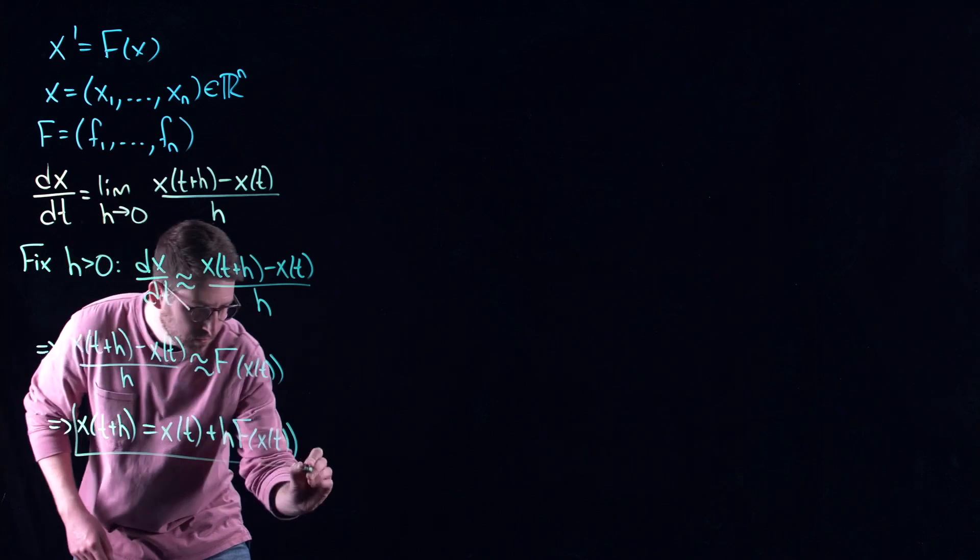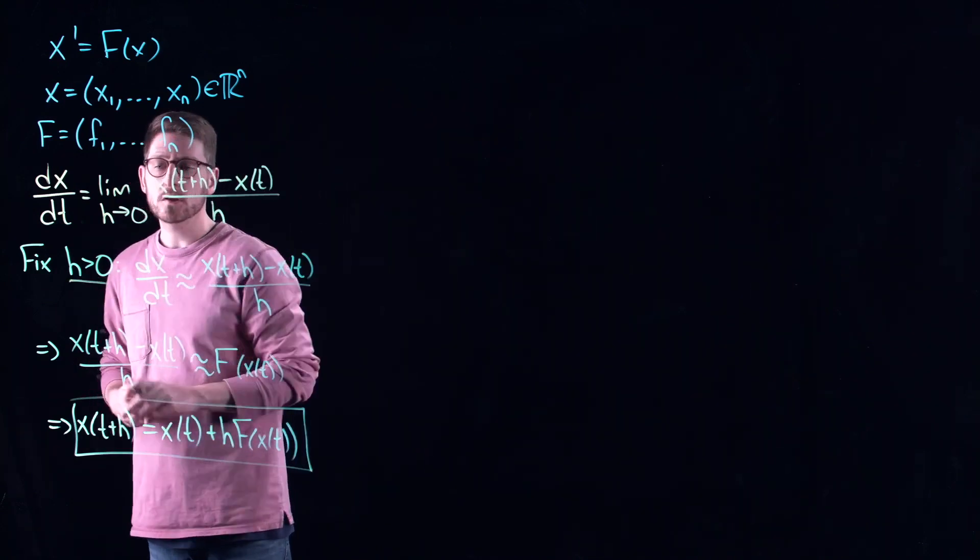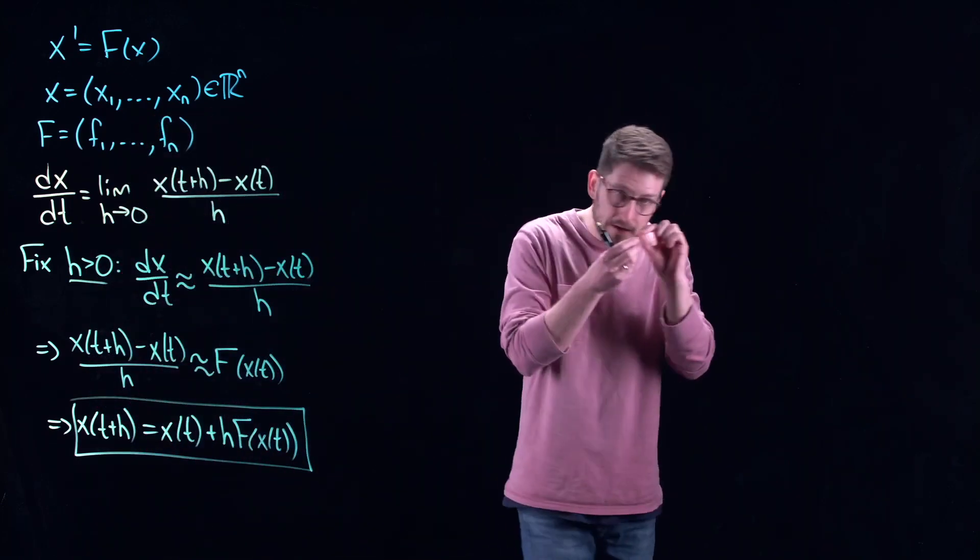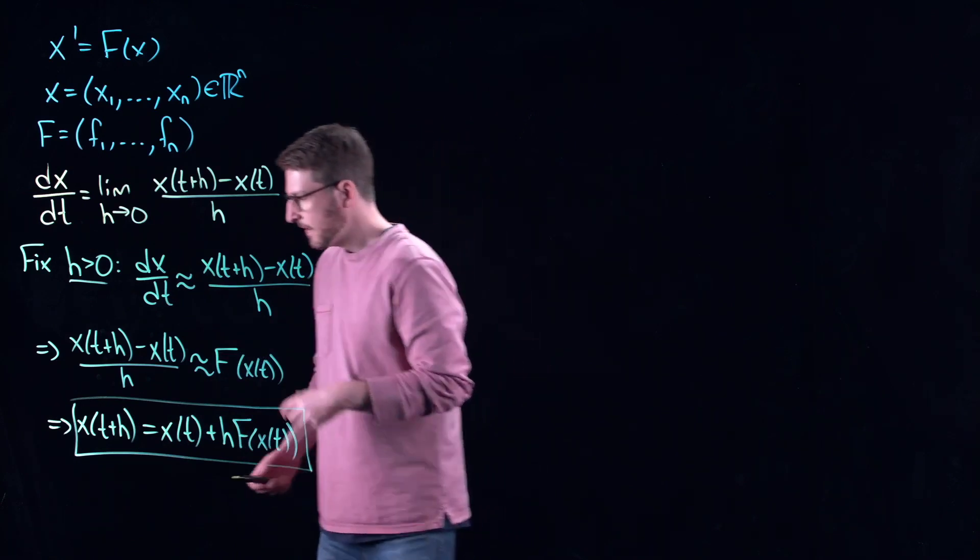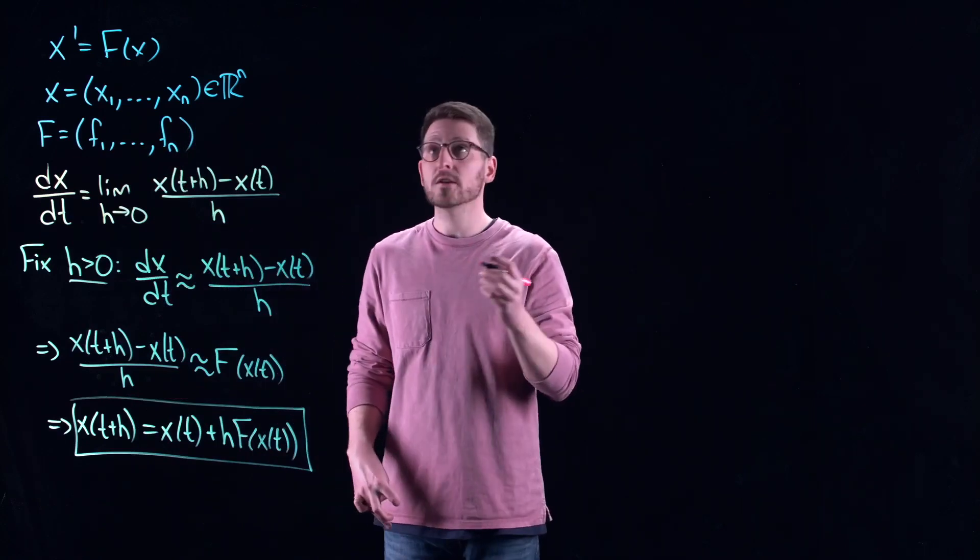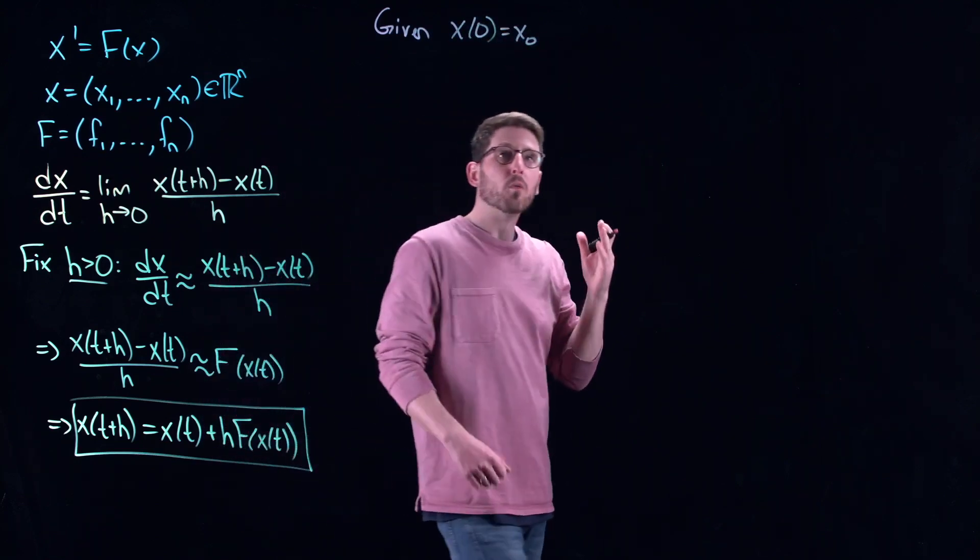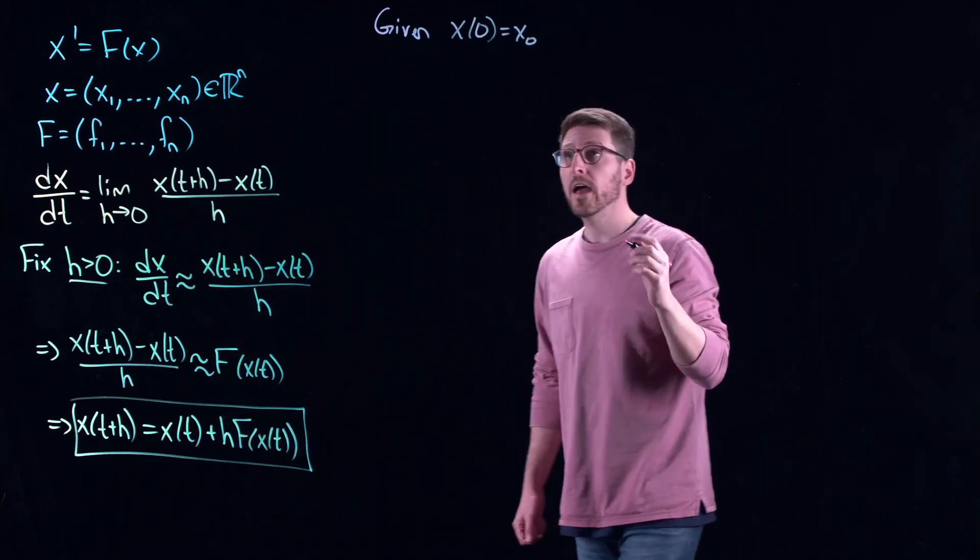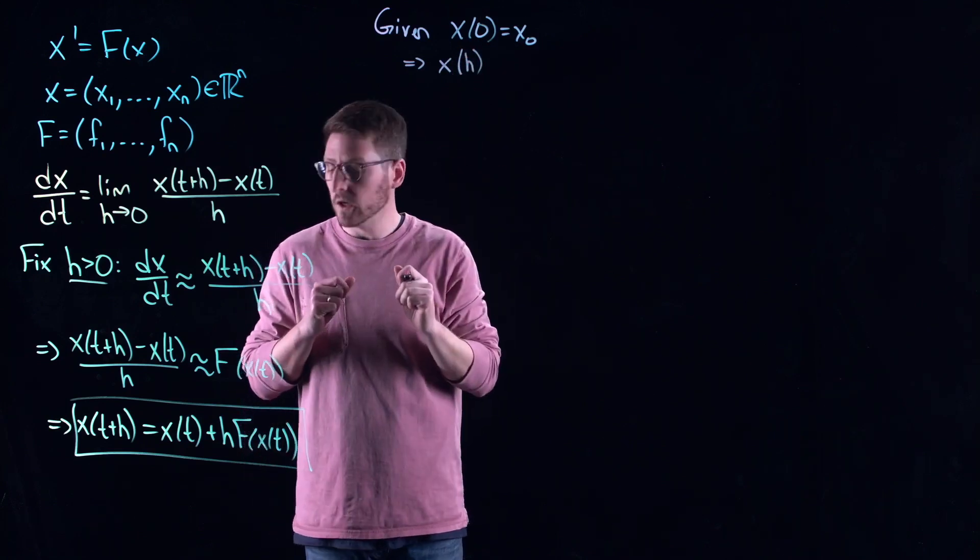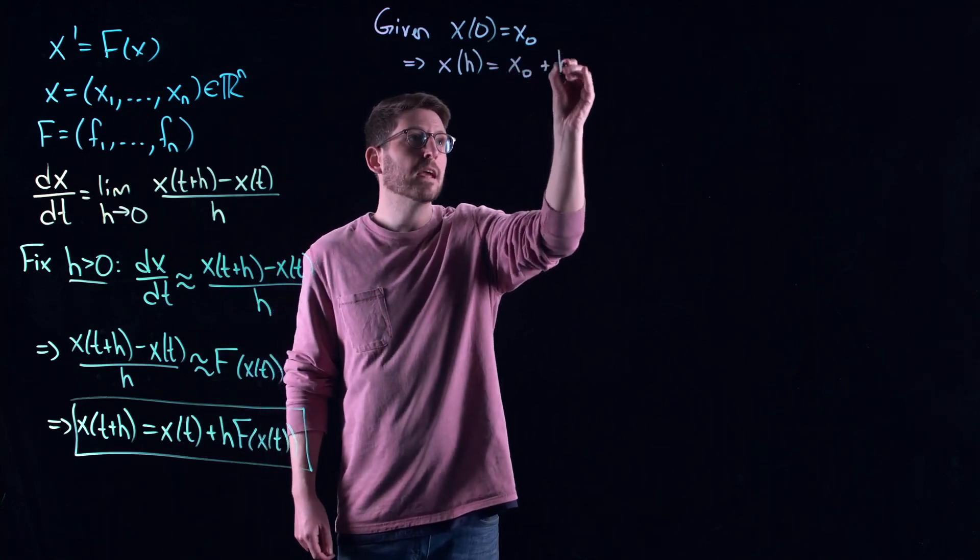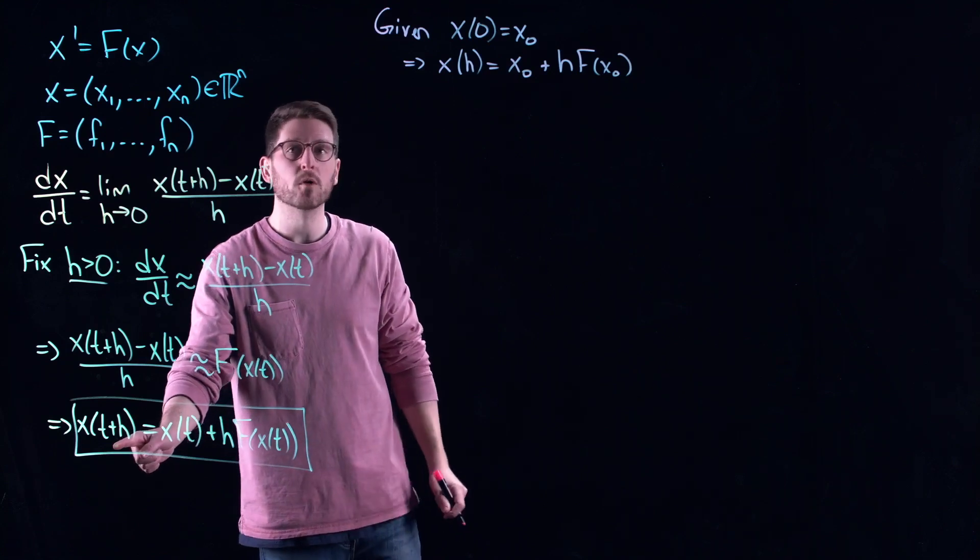This is exactly h units of time into the future. Think about this in terms of a discrete dynamical system. I know what's happening currently. Then I can rearrange this equation to know what's going to happen next. If I take this equation and open it up, I have x of t plus h equals x of t plus h f of x of t. This right here is called the Euler method.